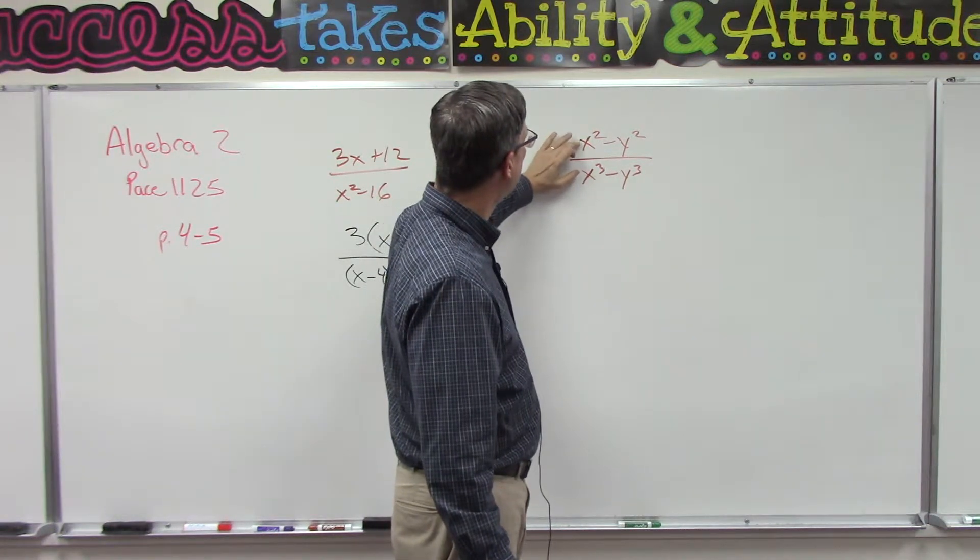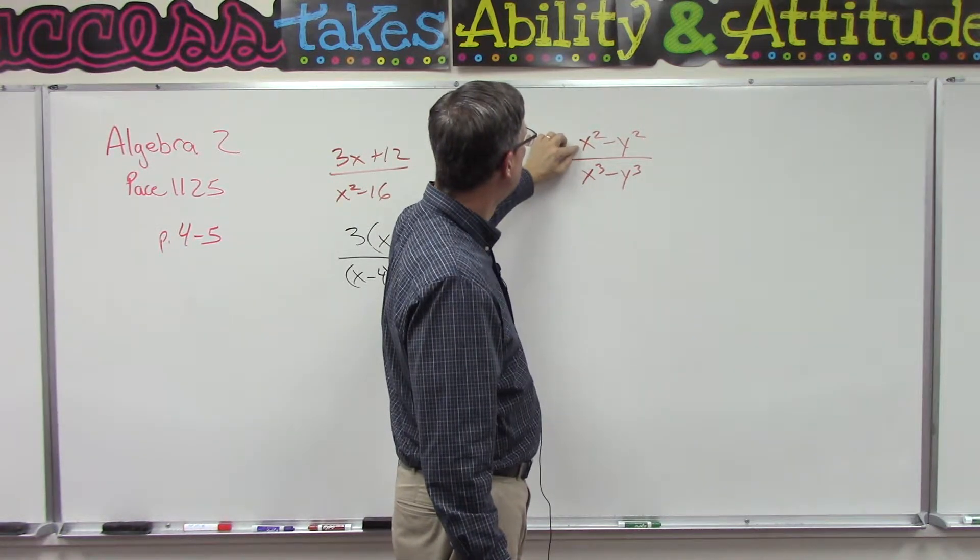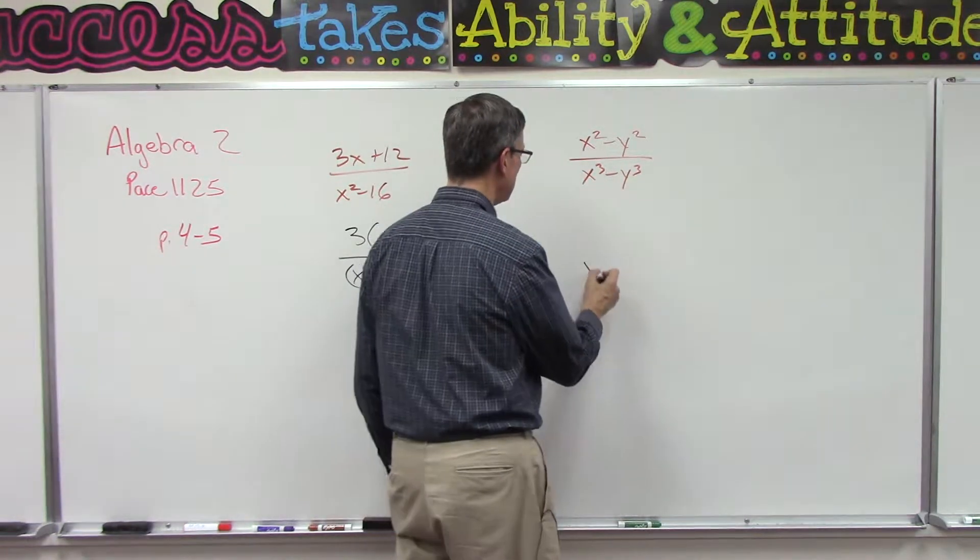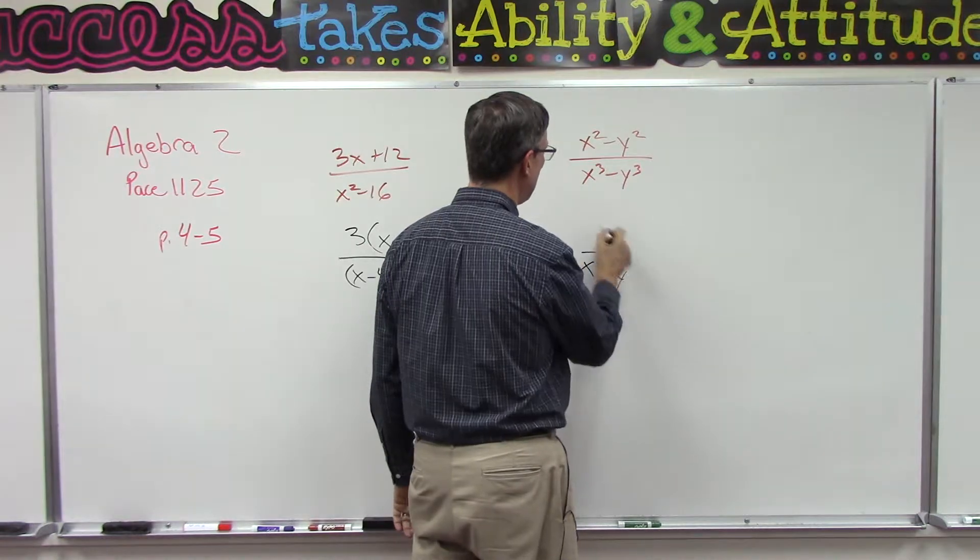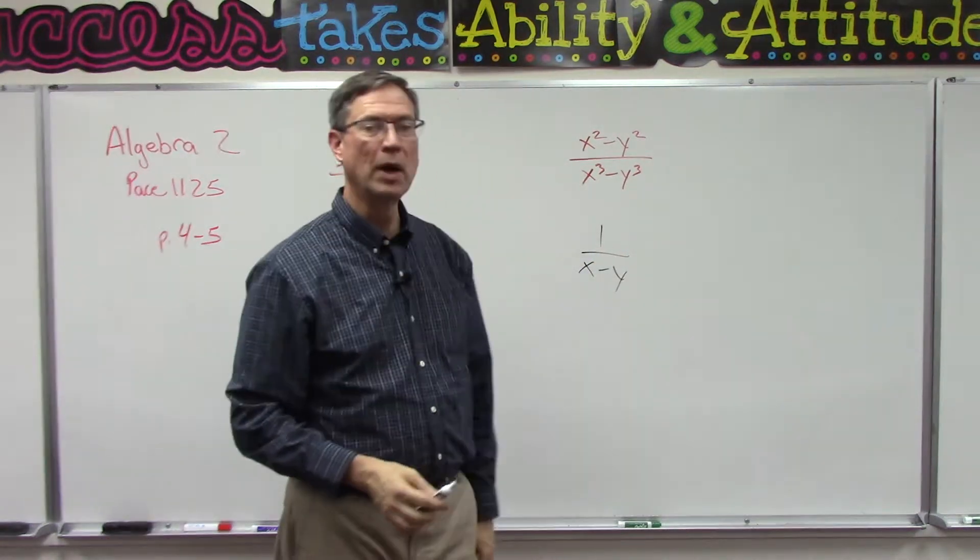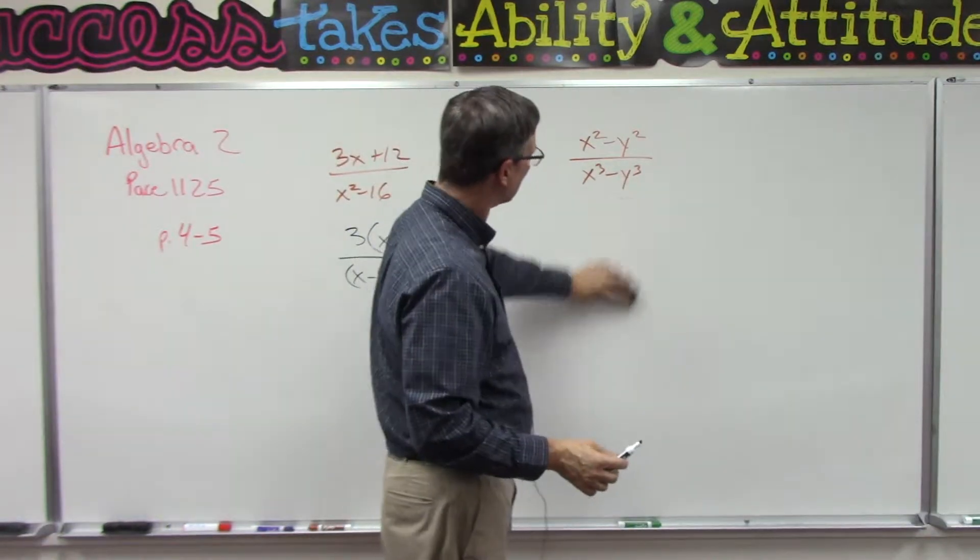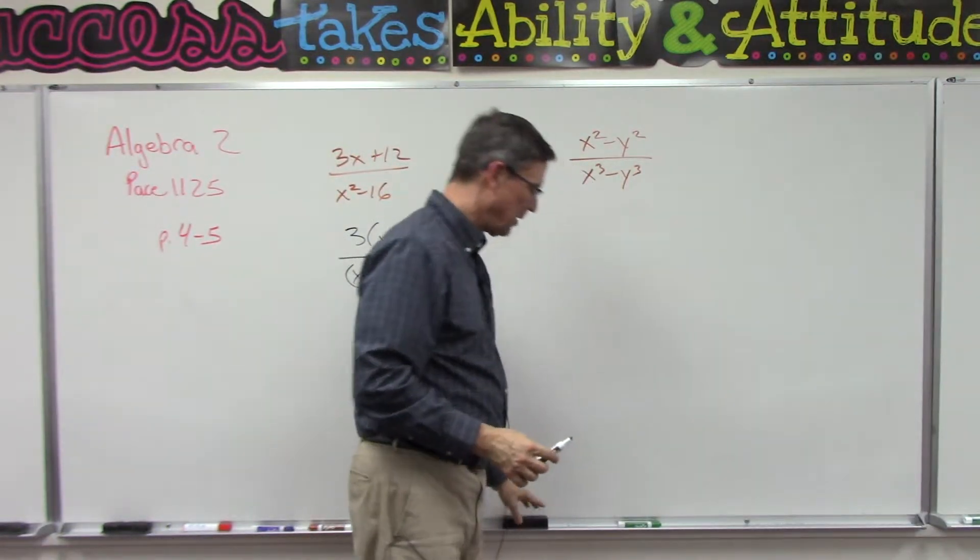All right, over here sometimes I'll have students look at this and say, oh, I can do x³ and x² and subtract and get x on the bottom, and in here, you know, minus y on the bottom, so 1 over x minus y. No, we cannot do that.